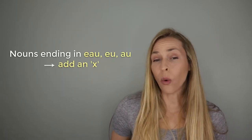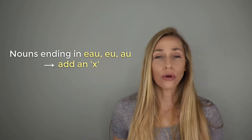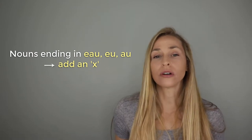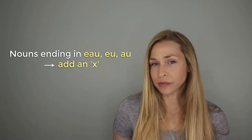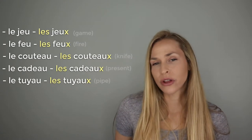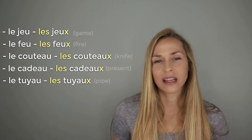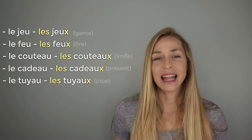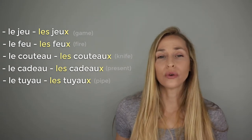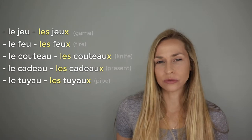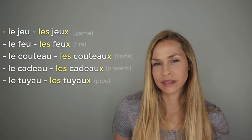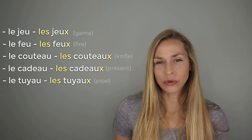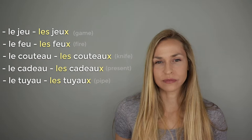Nouns that end in AU, EAU, or EU — you simply add an X to form the plural. Let's go over a few examples: le jeu, les jeux. Le feu, les feux. Le couteau, les couteaux. Le cadeau, les cadeaux. And lastly, le tuyau, les tuyaux.